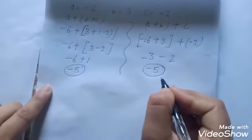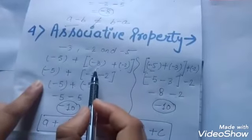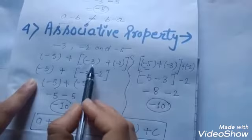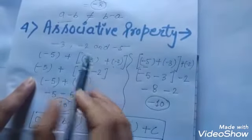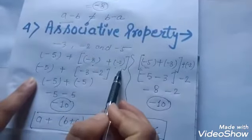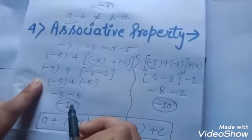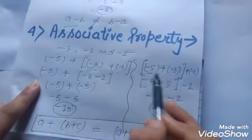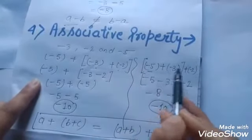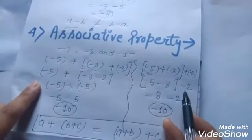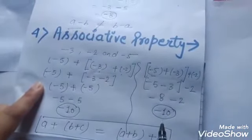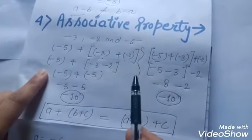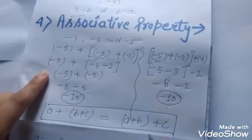So addition is associative for integers. इसका मतलब है कि हम integers को किसी भी order में plus करें तो हमारा answer same आता है। पहले हमने minus 3 और minus 2 को plus किया और उसके साथ minus 5 को plus किया। दूसरे में group को change किया — पहले minus 3 और minus 5 को plus किया, फिर minus 2 को plus किया — तब भी answer minus 10 ही आया। हम numbers को किसी भी order में change करें तो answer same रहता है।